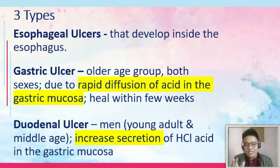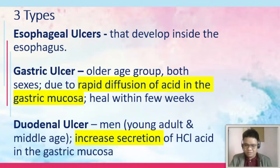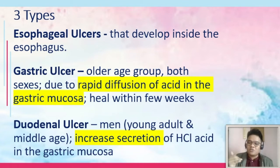On the other hand, duodenal ulcer is near the pylorus — 1.5 centimeters from the pylorus going toward the duodenum. Duodenal ulcer is common in men, young adults, and middle age, and is characterized by increased secretion of hydrochloric acid in the gastric mucosa. In gastric ulcer, there is normal or decreased secretion of acid, whereas in duodenal ulcer, there is increased secretion of acid.